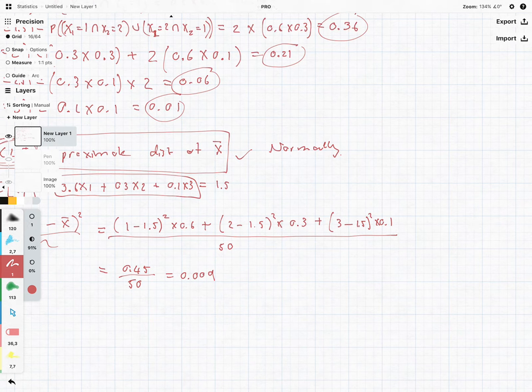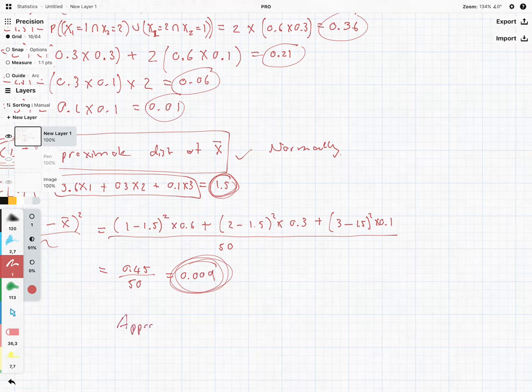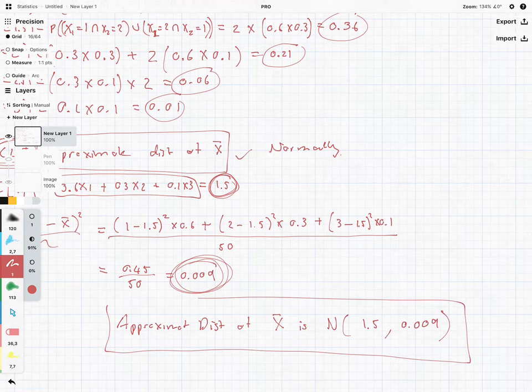Now we can use this and this as our two parameters. So we can say the approximate distribution of x bar is normally distributed with 1.5 as the mean and 0.009 as our variance. And ta-da, there you are, question done.